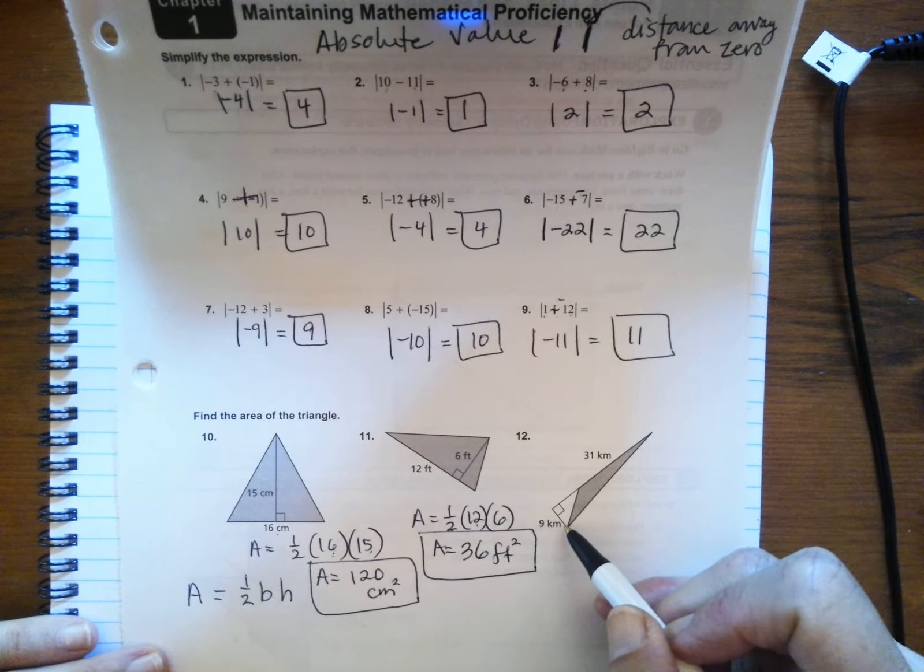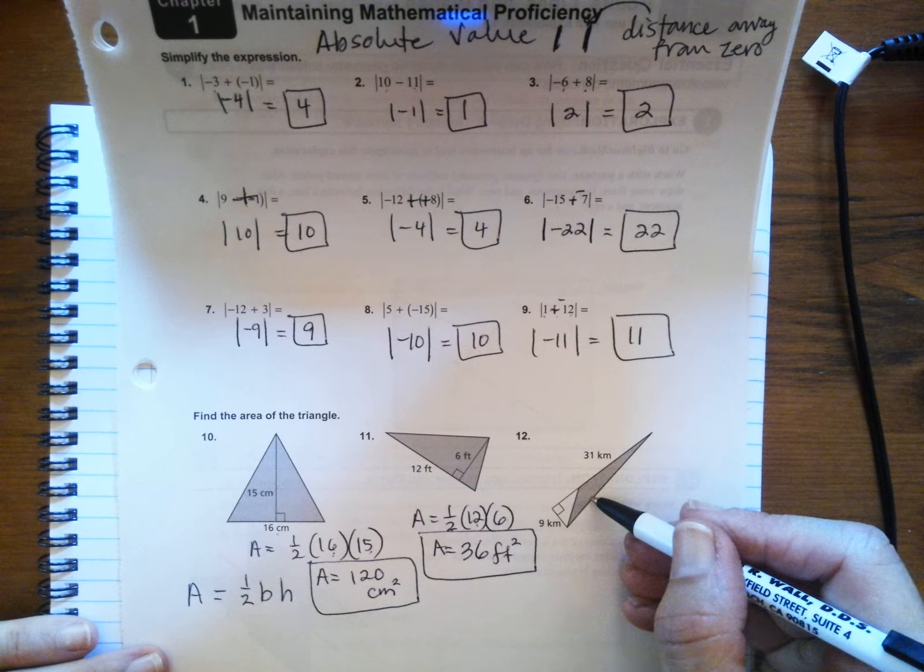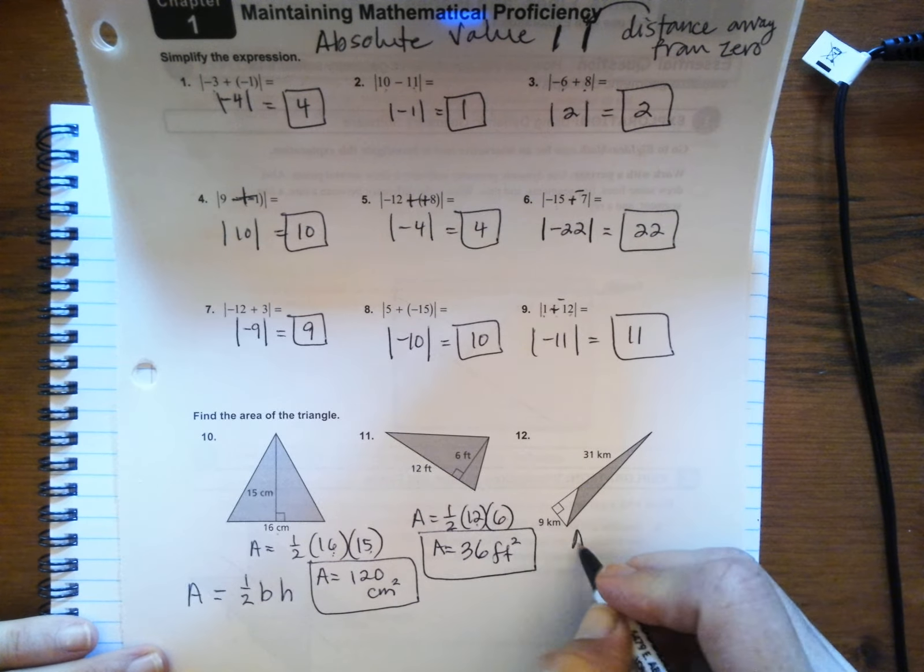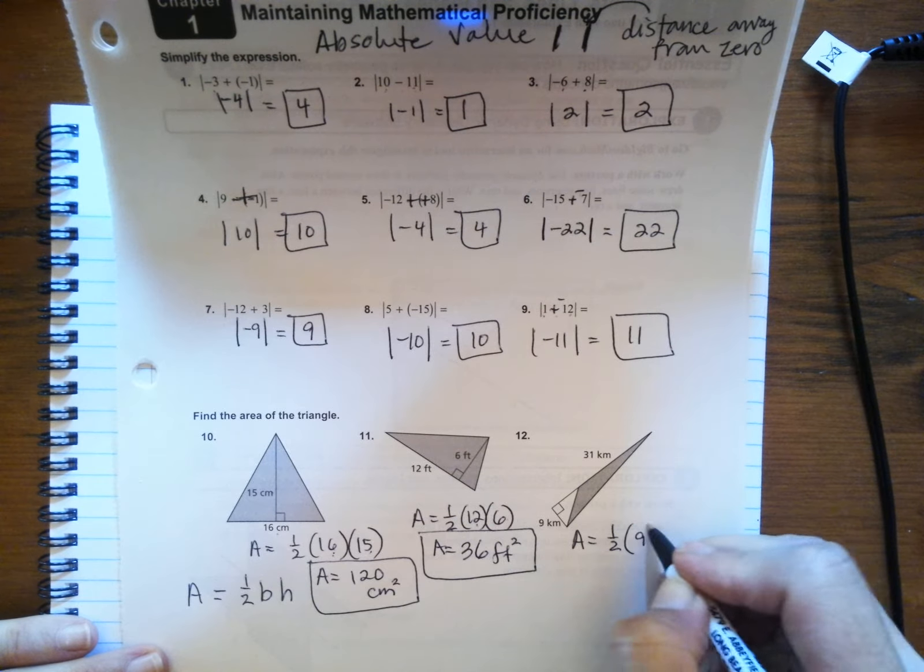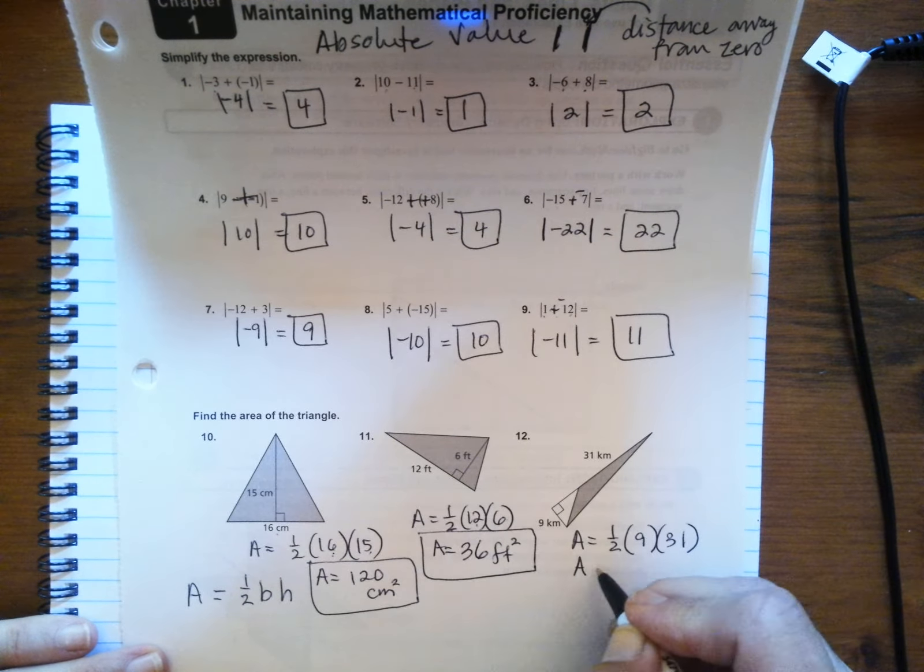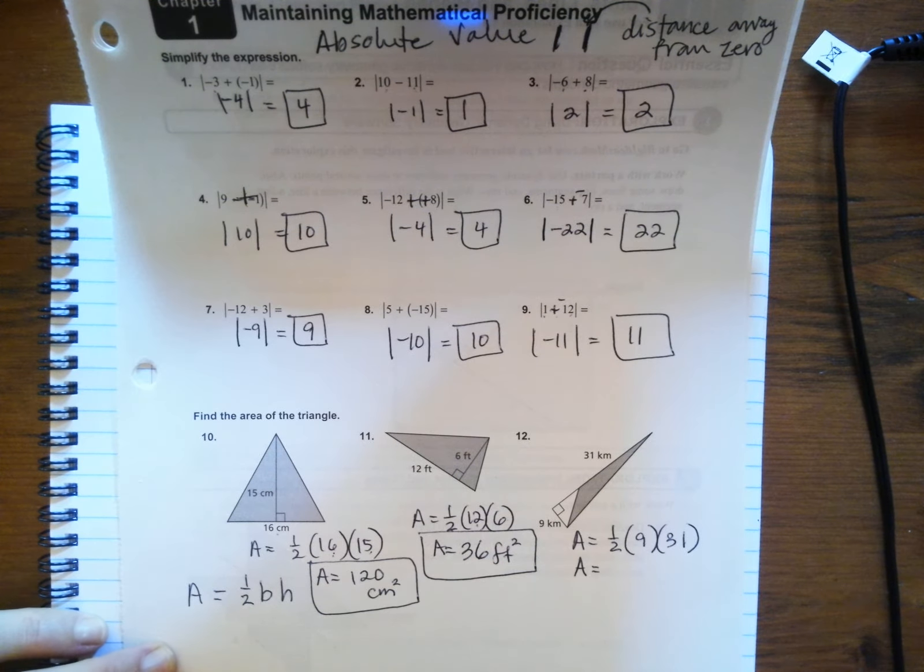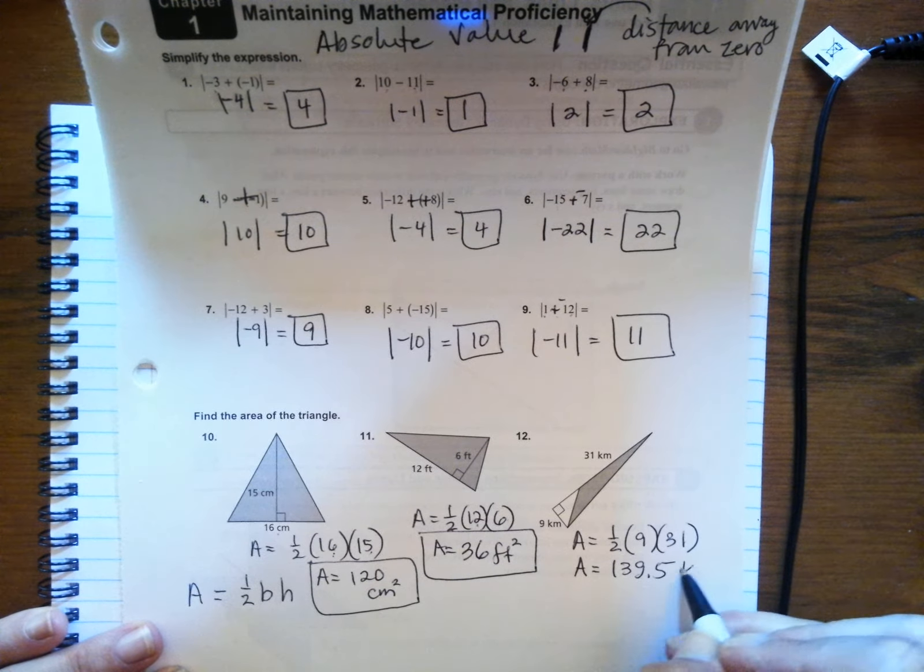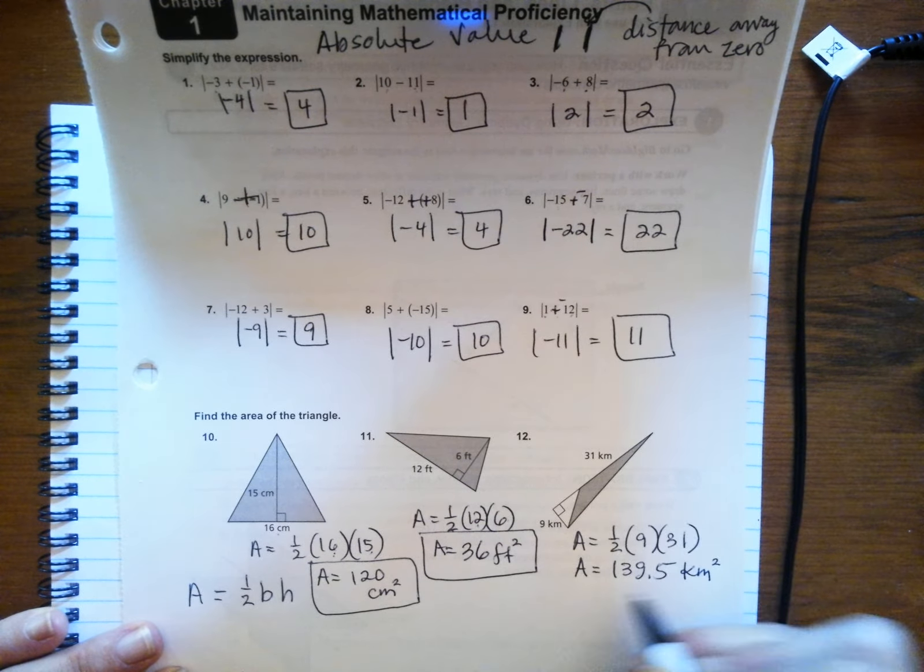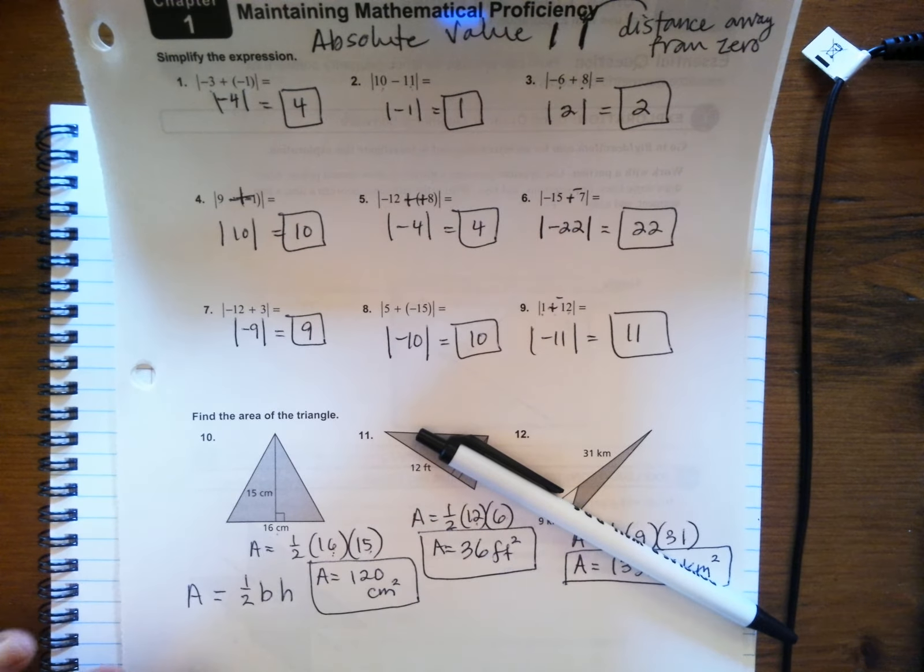And then this one, even though this is outside, it is the perpendicular height, which is 9. So A is one half times 9 times 31. And I don't even know what that is. I grab my calculator for this. So that's 139.5, and my units are kilometers squared. So that's the review of math proficiency for Chapter 1, Lesson 1.